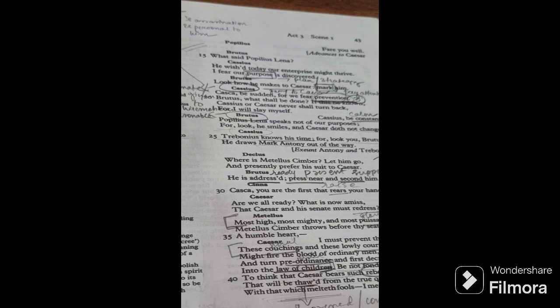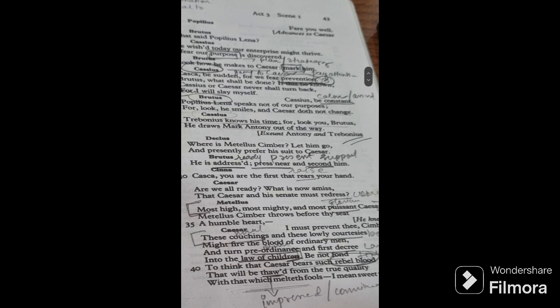But Brutus being Brutus, being the logical, rational statesman that he is, says Cassius, be constant, be calm, be assured, be steady. Popilius Lena speaks not of our purpose. He is not talking about our plan. For look, he smiles and Caesar does not change. Look, he is smiling and Caesar's expression is not changing. Cassius Trebonius knows his time. Trebonius knows when to go, when to do what. Look you, Brutus. Look, Brutus, he draws Mark Antony out of the way. He is taking out Mark Antony out of the way. Decius, where is Metellus Cimber? Let him go. Let him go forward and presently, immediately at this moment, give his suit to Caesar. He is addressed, pressed near and second. He is ready. He is present and support him. Let's support him. Let's be there. Cinna, Casca, you are the first that rears your hand. You are the first who is going to raise your hand.